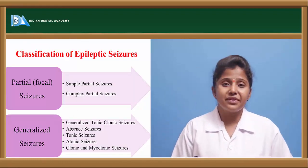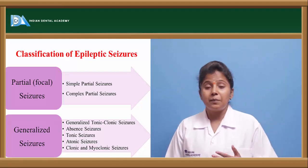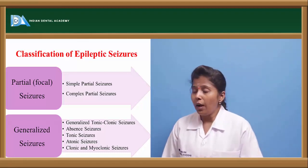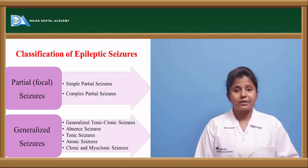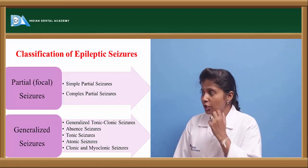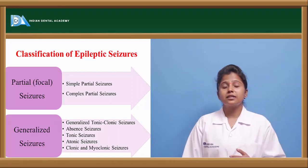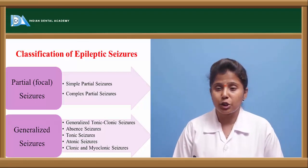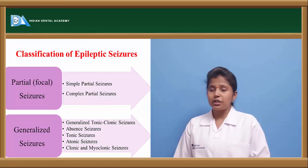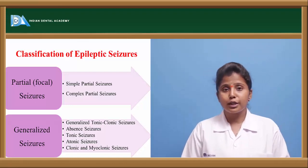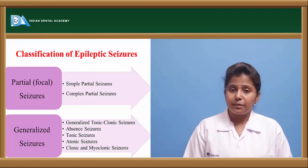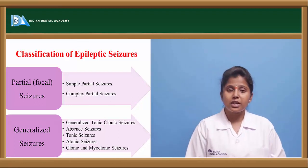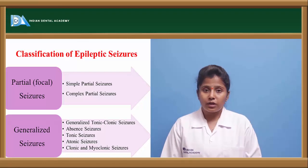Epileptic seizures are divided into partial or focal seizures and generalized seizures. Partial or focal seizures are further divided into simple partial seizures and complex partial seizures. Generalized seizures are categorized into generalized tonic-clonic seizures, absence seizures, tonic seizures, atonic seizures, and clonic and myoclonic seizures.